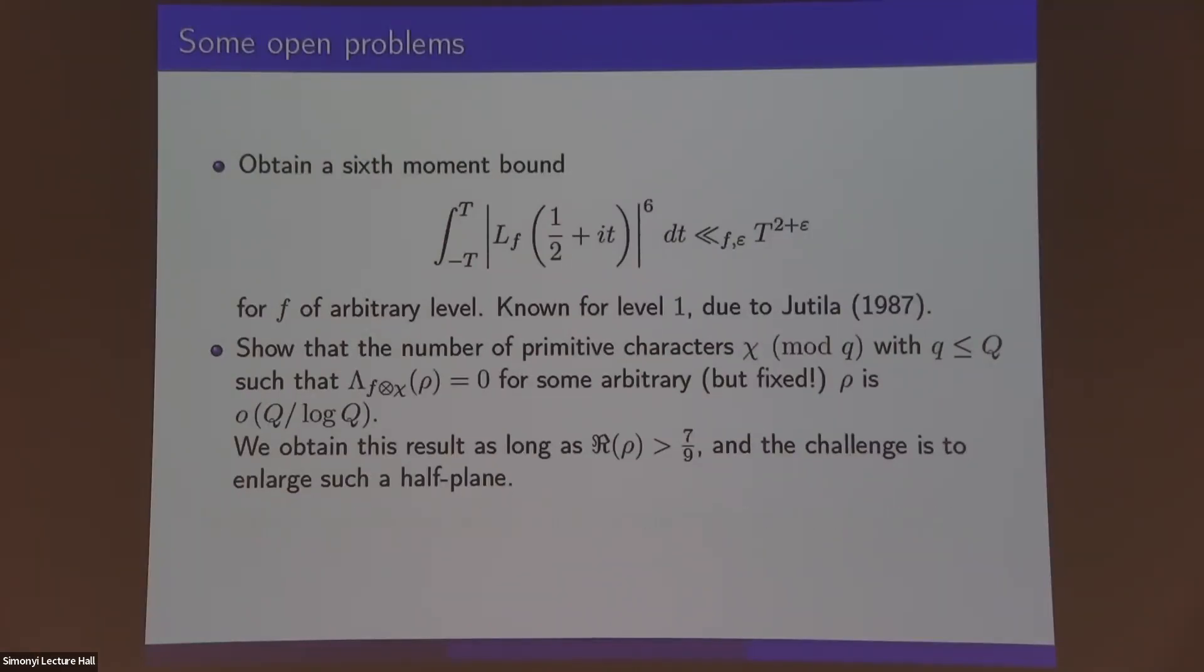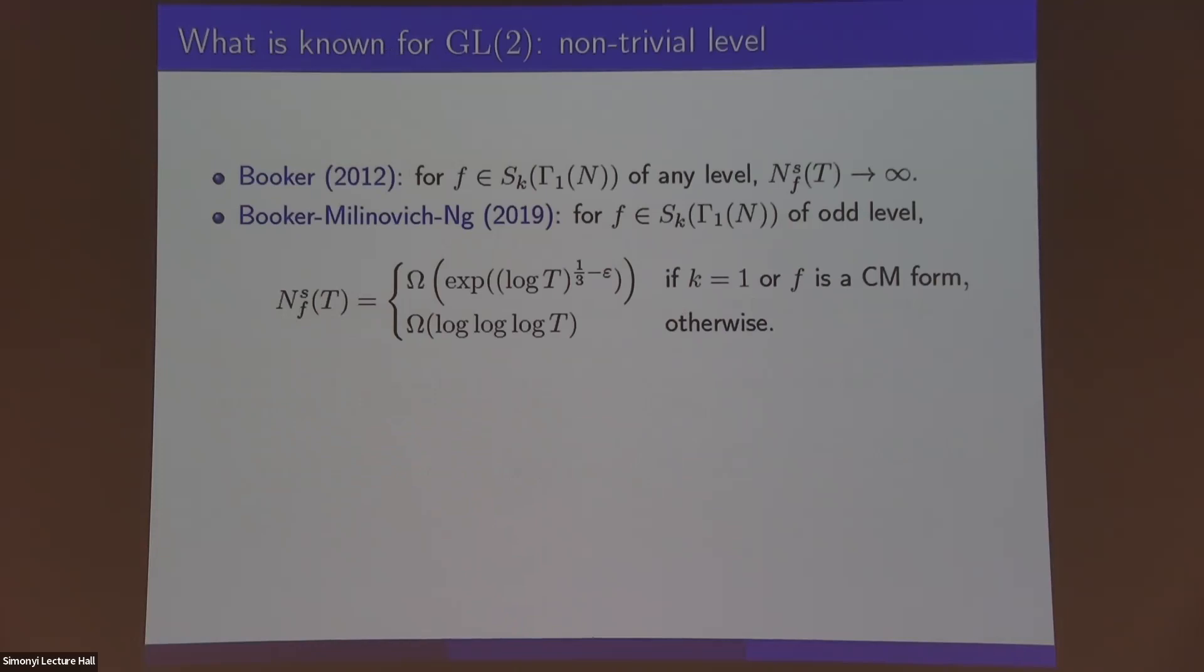Yeah, so the result of Booker, so infinitely many simple zeros, this result was generalized by Booker, Choi, and Kim to Maass forms. Those two haven't yet, but there should be no serious obstructions. So I use the Ramanujan-Petersson conjecture here for simplicity, but it's actually not necessary, so all of the information that you need about the Fourier coefficients is already coming from, for instance, Rankin-Selberg. So it should be possible.